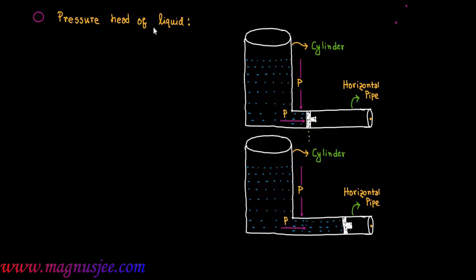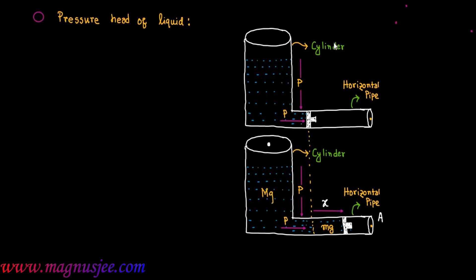We can denote the displacement of liquid in the horizontal pipe, or the displacement of the piston, as x — the displacement of the liquid flowing through this horizontal pipe along with the piston. Small mg is the weight of liquid displaced for a displacement x, and capital Mg is the weight of liquid placed in the vertical cylinder.